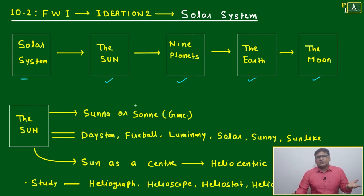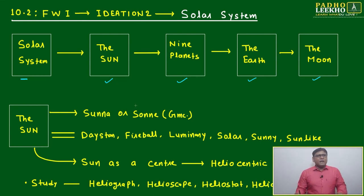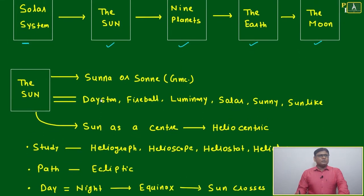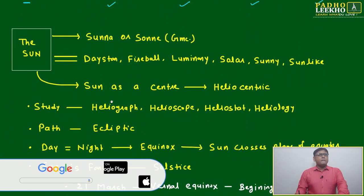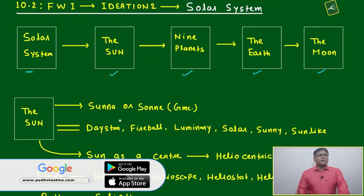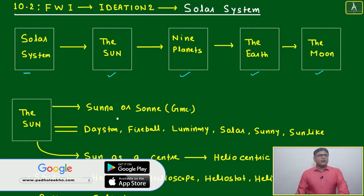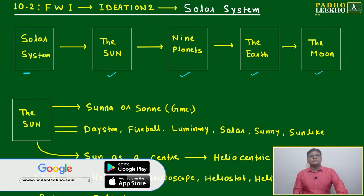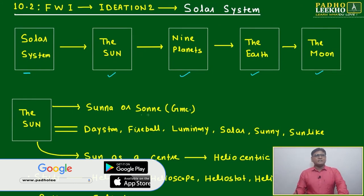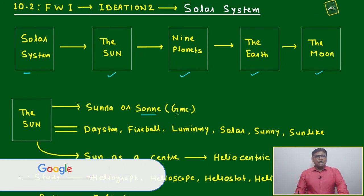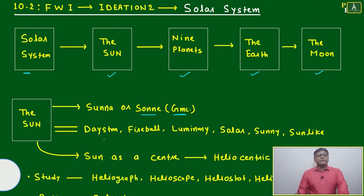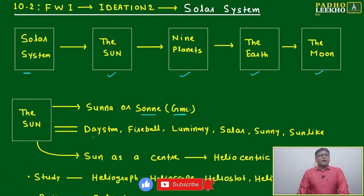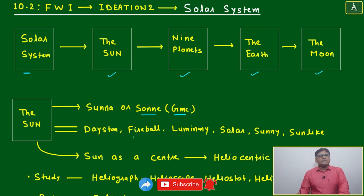Now we will start with the main planet — or rather, star — of the solar system: the sun. 'Sun' has come from 'sunni' or 'sunna,' that is from the Germanic language. Parallel words for star include: day star, fireball, luminary, solar, sunny, sun-like.